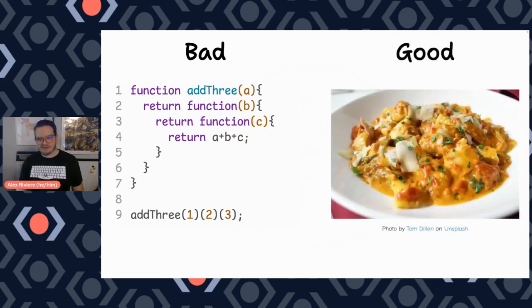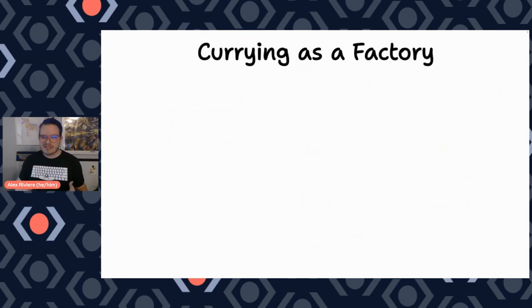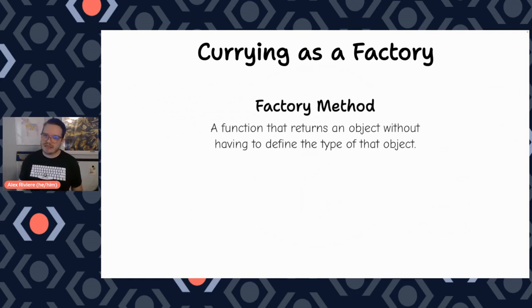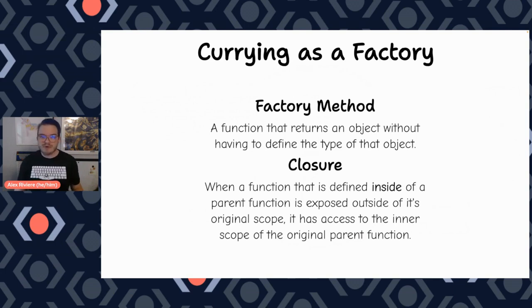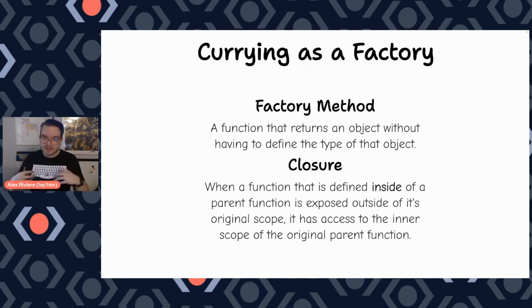So what is a good currying function? Let's talk about currying as a factory pattern or a factory method. A factory method is a way of creating a generic object — you can have it be whatever shape you want to. So rather than defining a class, you're able to just return an object with some properties on it. And if you pair that with functions, you get closures, where you're able to create values inside of the parent function and have them be returned. And you can access those as sort of private values.